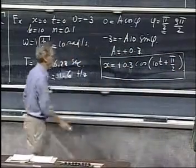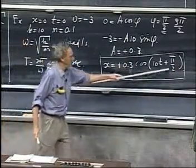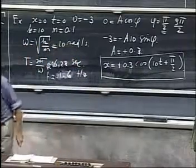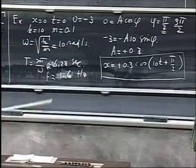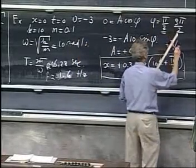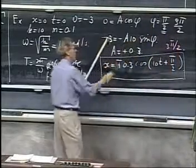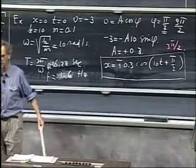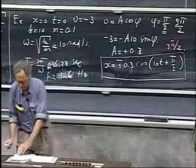If you had chosen this as the phase angle, three pi over two, that would have been fine. You would have found a minus sign here, and that's exactly the same. So you would have found nothing different.